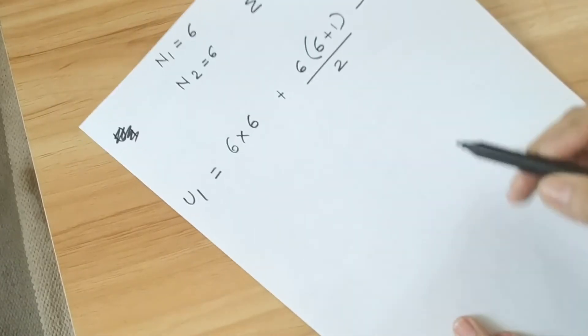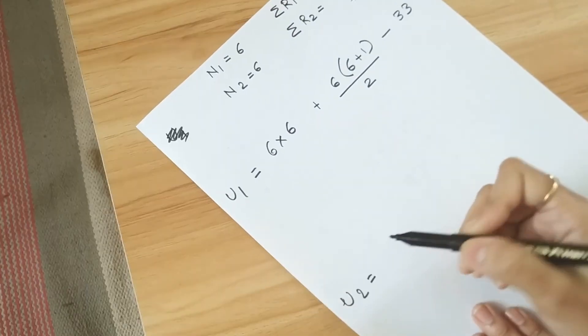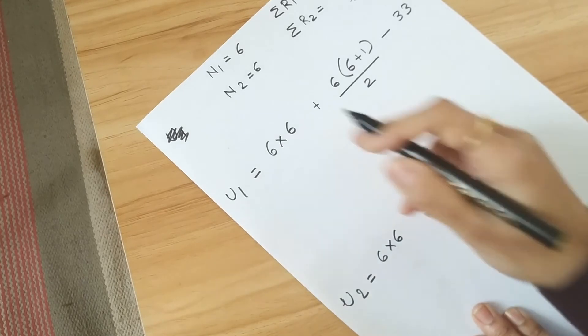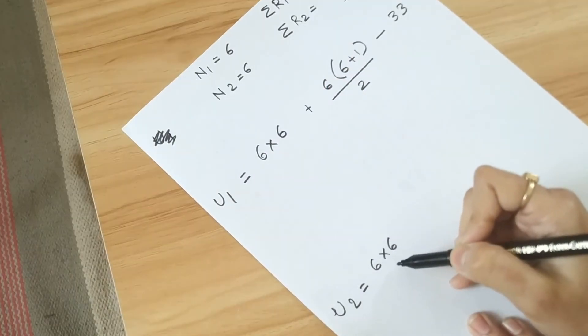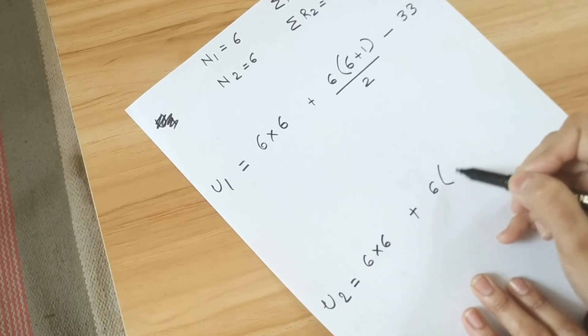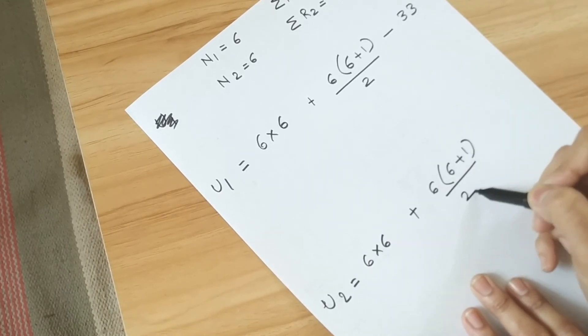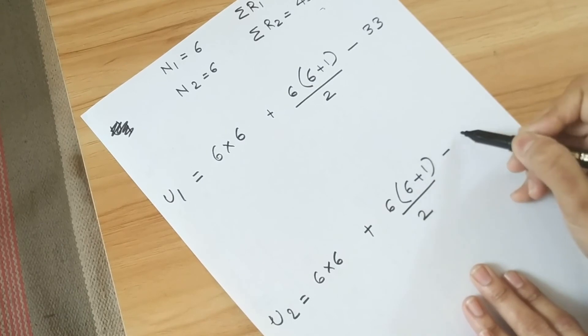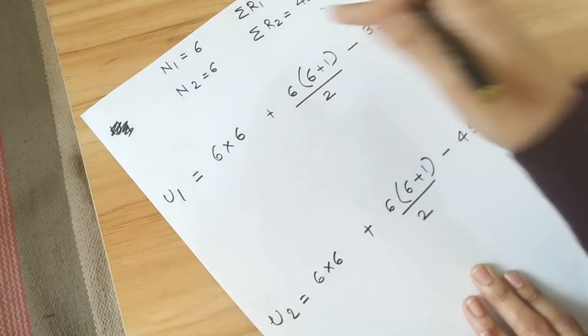And similarly U2 is 6 into 6 that is N2, N1 multiplied by N2 plus N2 again N2 plus 1 divided by 2 minus 45 that is sigma R2.